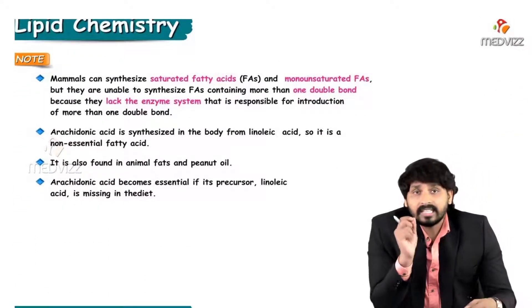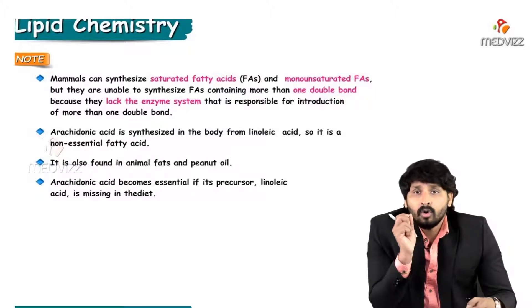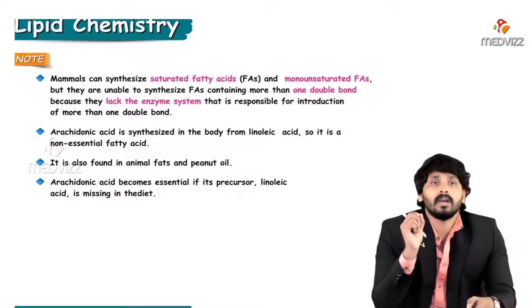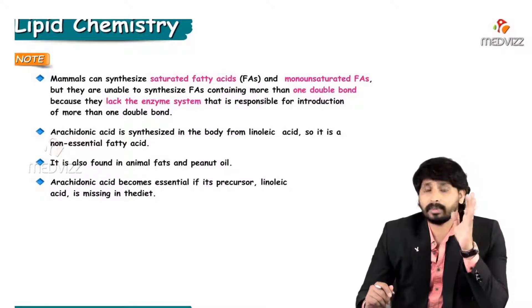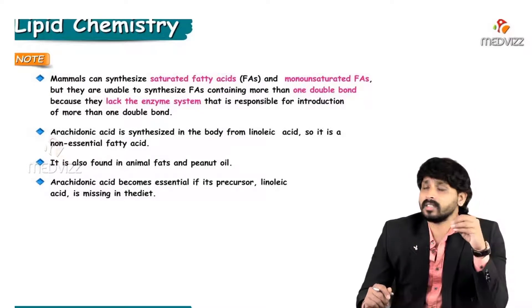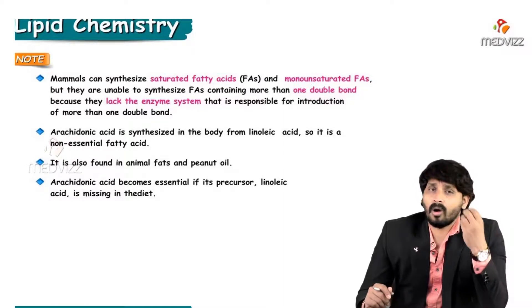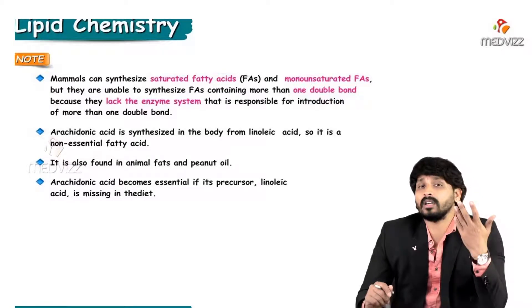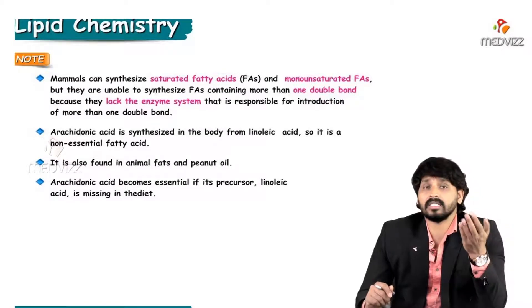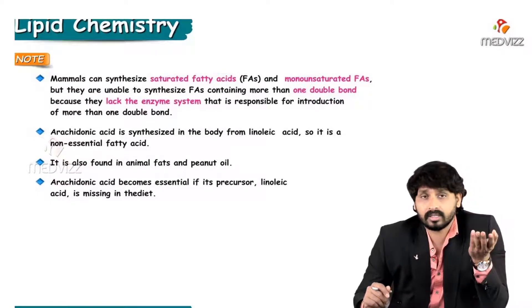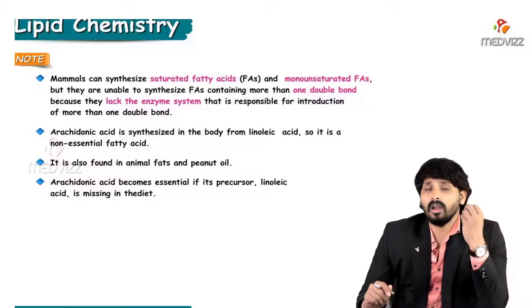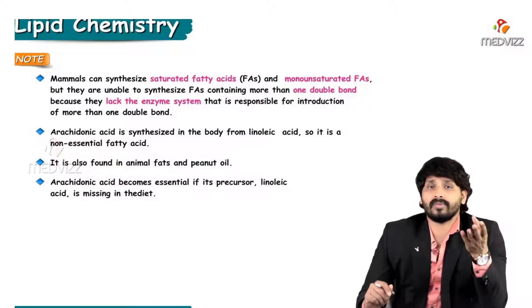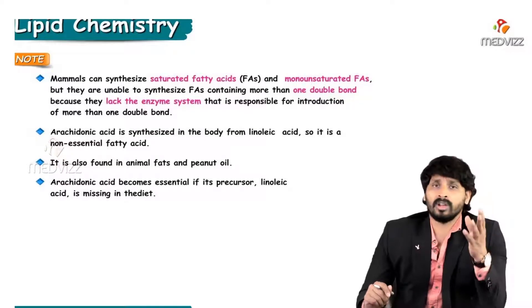Mammals can synthesize saturated fatty acids and monounsaturated fatty acids, but they are unable to synthesize fatty acids containing more than one double bond. That is why animal lipids are mostly saturated fatty acids. However, for health we do require unsaturated fatty acids such as polyunsaturated fatty acids, which are present mainly in vegetable oils. Animal oils contain saturated fatty acids, limited to monounsaturated fatty acids.